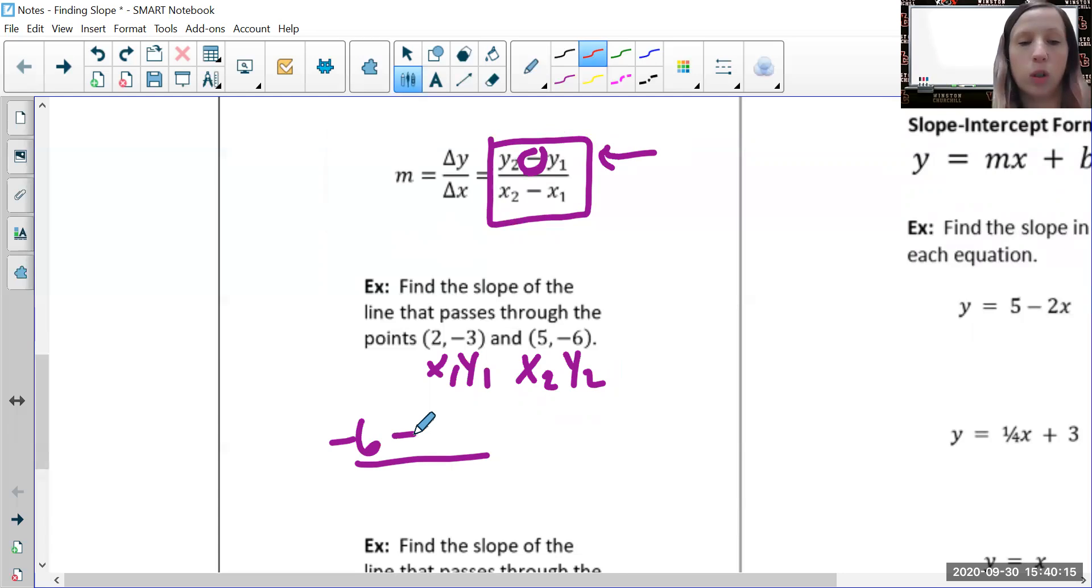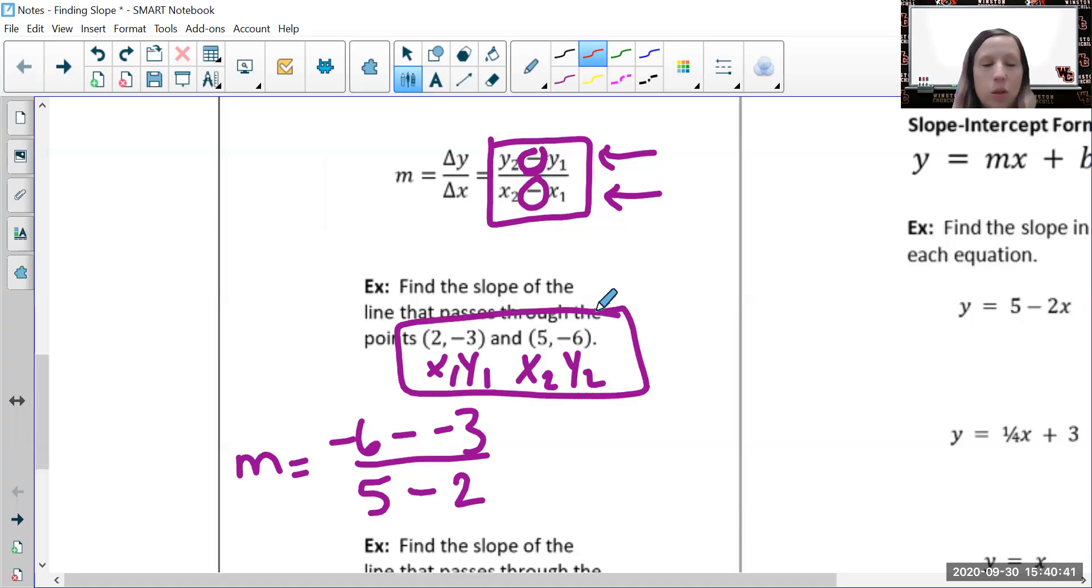Then y1 which is negative three - notice the double negative. The bottom is x2 which is five minus x1 which is two. Now turn the double negative into a plus: negative six plus three is negative three, and five minus two is three. Divide: negative three divided by three is negative one.